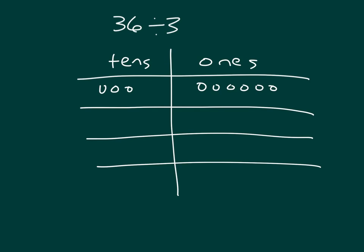Let's start by dividing the largest unit. Which is larger, ones or tens? Right, tens. So we have three tens that we are dividing — three tens divided by three gives us one ten. That's our answer for the tens. Then dividing the ones: two, four, five, and six ones among the groups.